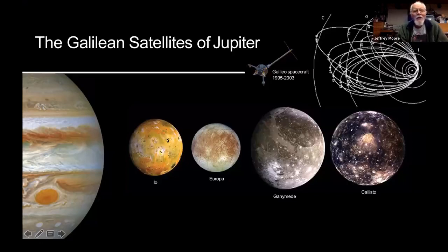Europa is one of the four Galilean satellites — they're all large objects. The Earth's moon, for instance, falls between the size of Io and Europa. Ganymede is the largest satellite in the solar system — it's larger than the planet Mercury. Callisto is almost the same size, as is Saturn's moon Titan.